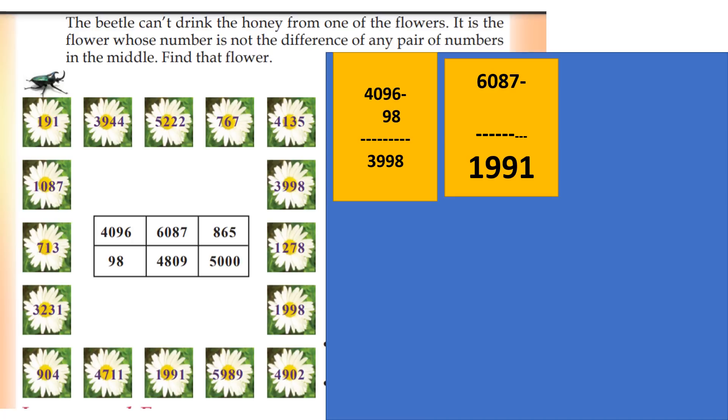Let's start with 4096 minus 98. So 4096 minus 98 equals 3998. We'll write down 3998.